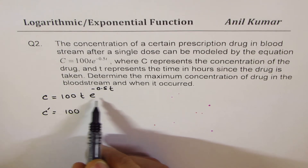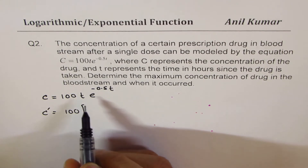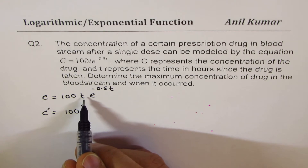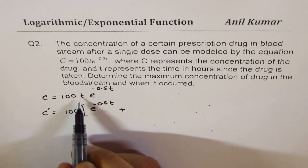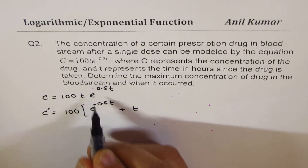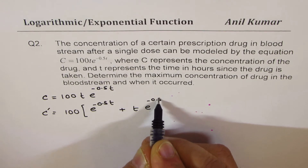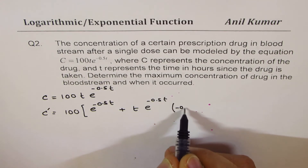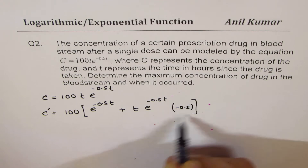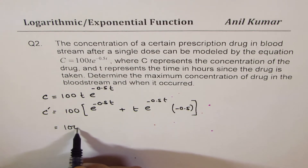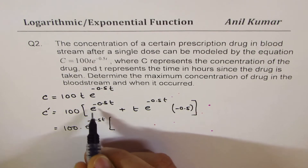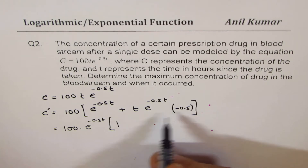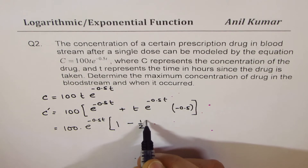Let's find the derivative of this function. Applying the product rule: the derivative of t is 1, giving e^(−0.5t), plus t times the derivative of e^(−0.5t), which is e^(−0.5t)·(−0.5). We can factor out e^(−0.5t) to get C' = 100·e^(−0.5t)·(1 − 0.5t), or equivalently 100·e^(−0.5t)·(1 − t/2).